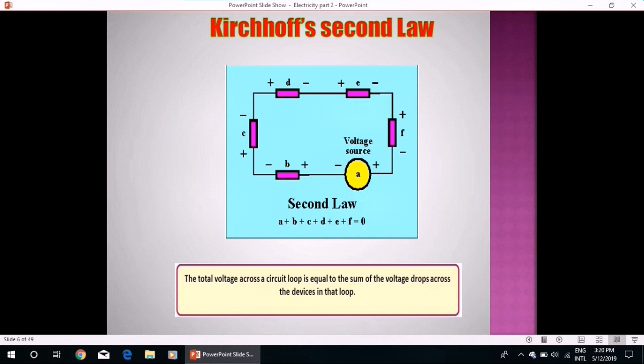Kirchhoff's second law: The total voltage across a circuit loop is equal to the sum of voltage drops across the devices in that loop. As an example, this is the voltage source. Now, the total voltage across this closed loop must be equal to 0. So, A plus B plus C plus T plus E plus F will be equal to 0. It will be more clear when we will solve examples in the following slides.